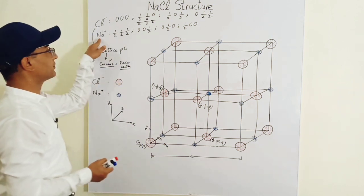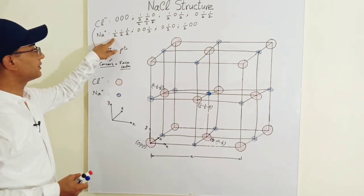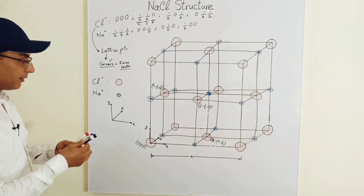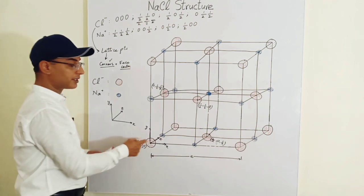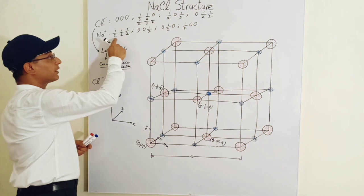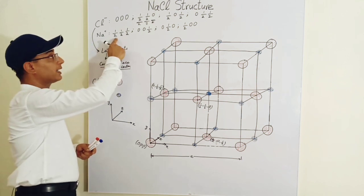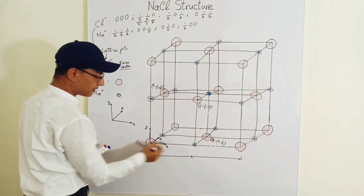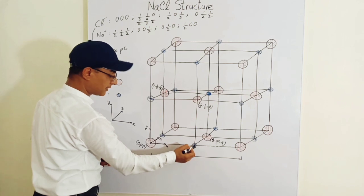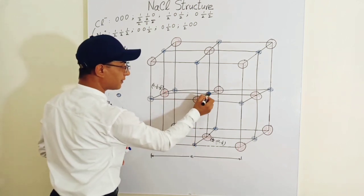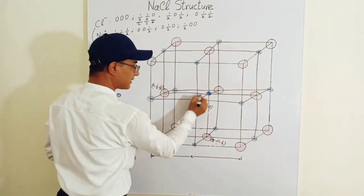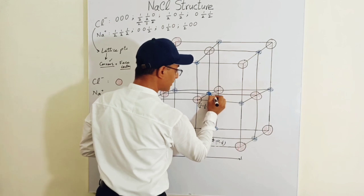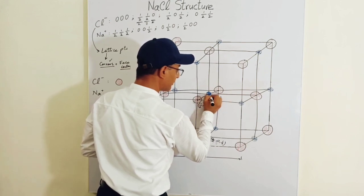Now let's locate the positions for the sodium ions. The first sodium ion is at (½, ½, ½). Starting from the origin, travel half distance along x, half along z, and half along y — and there is the body center, which is the position of the first sodium ion.